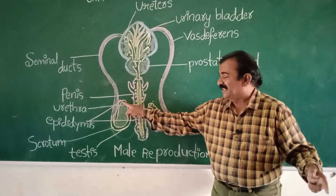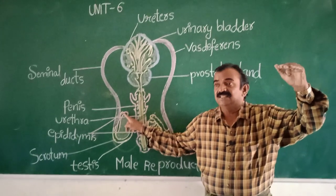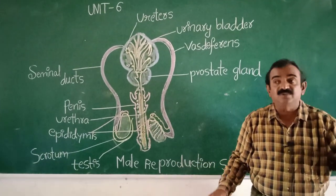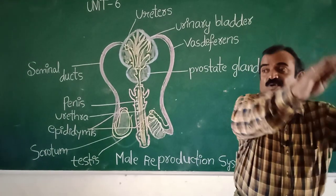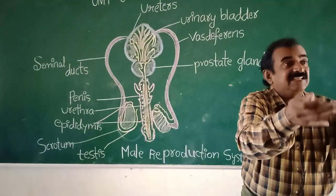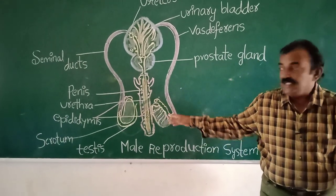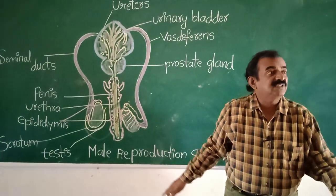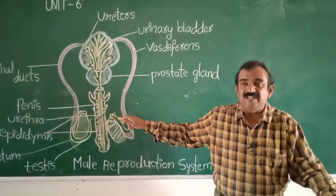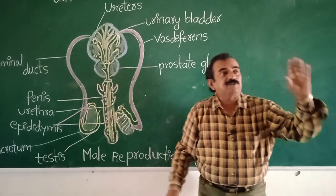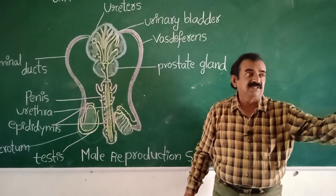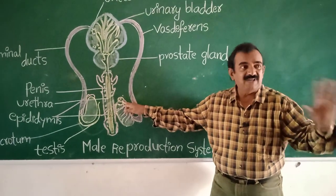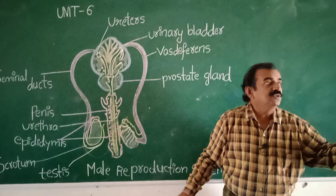The epididymis is present on the posterior part of the testes. The epididymis is useful to store sperms — sperms are stored in the epididymis. So three parts covered so far: testes, vasa efferentia, and epididymis. The function of the epididymis is to store sperms.